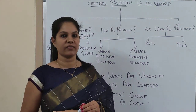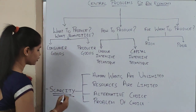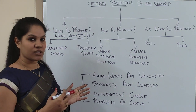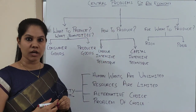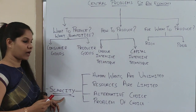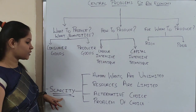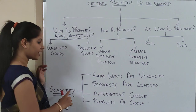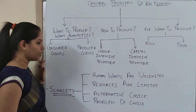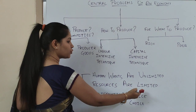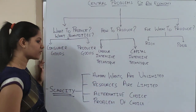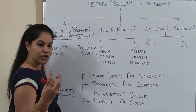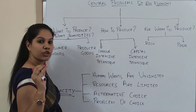I have already in previous videos discussed about scarcity definition. I have to repeat it in each and every topic because this is the main reason why every economic activity started in an economy. The scarcity definition, represented by R.R. Robbins, says human wants are unlimited. We have so many desires, but in front of that resources are very much limited. Because of that, we always go with alternative choices. You have very limited resources and you have to use them in the best possible way without wasting.